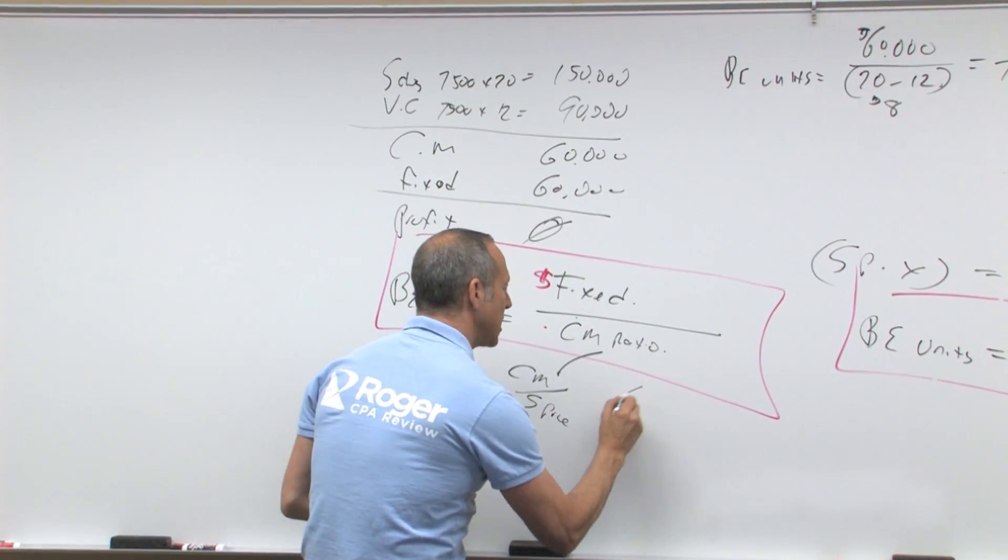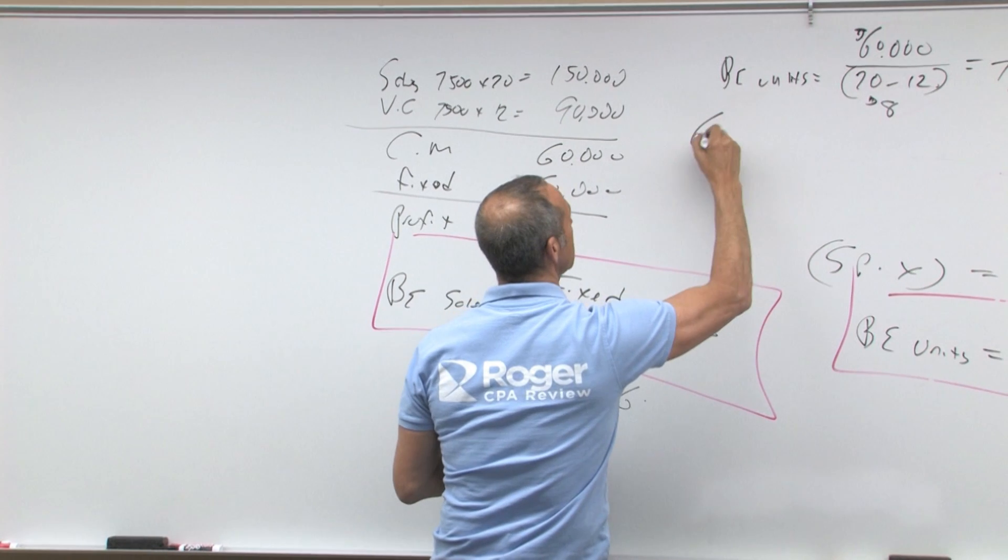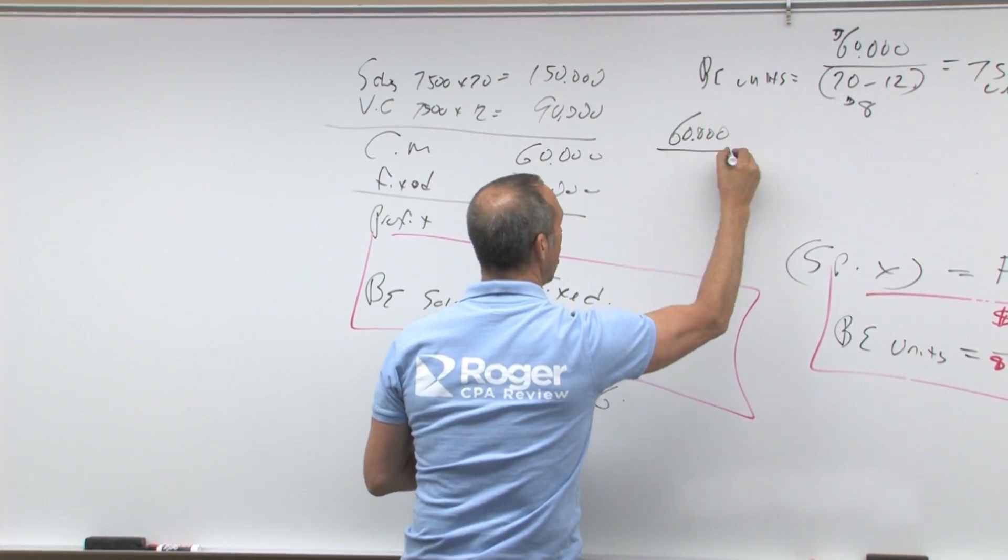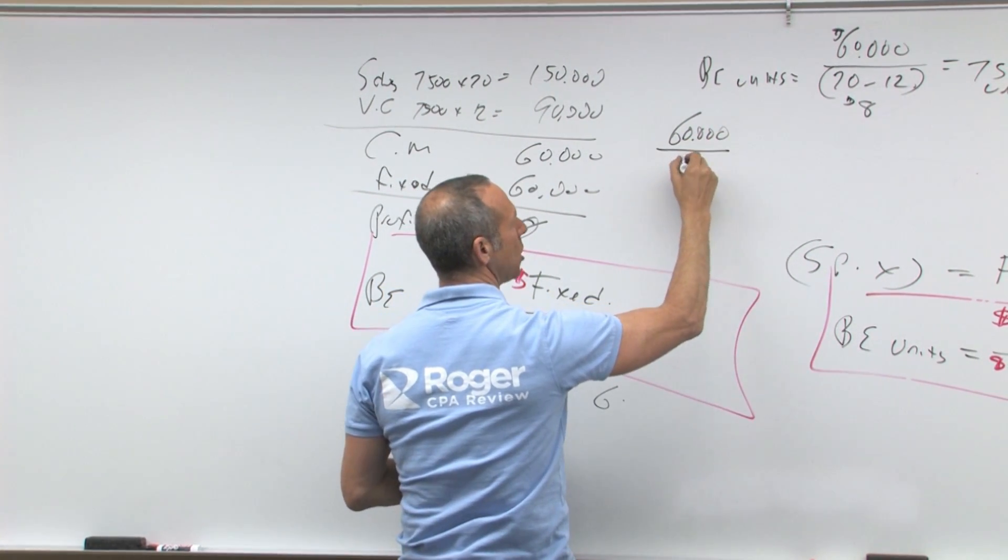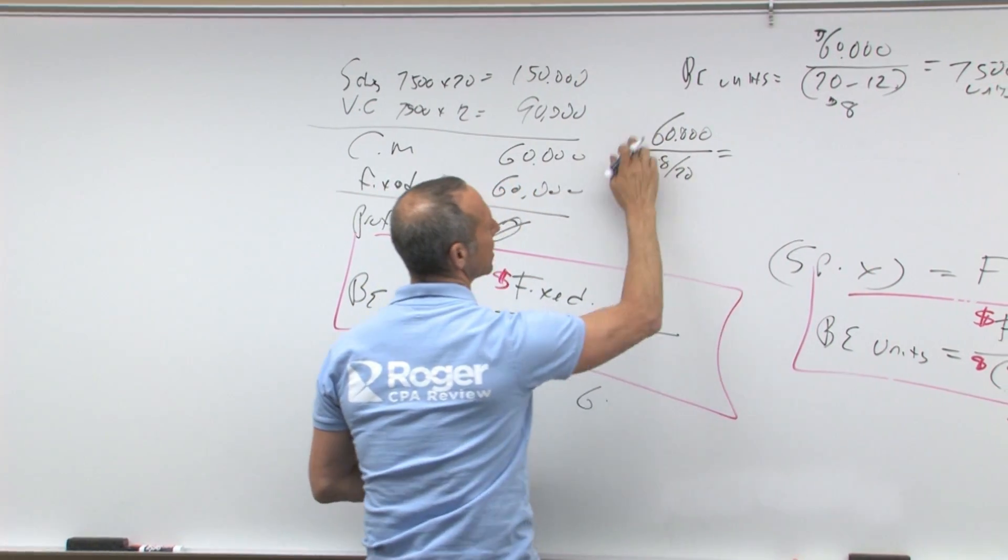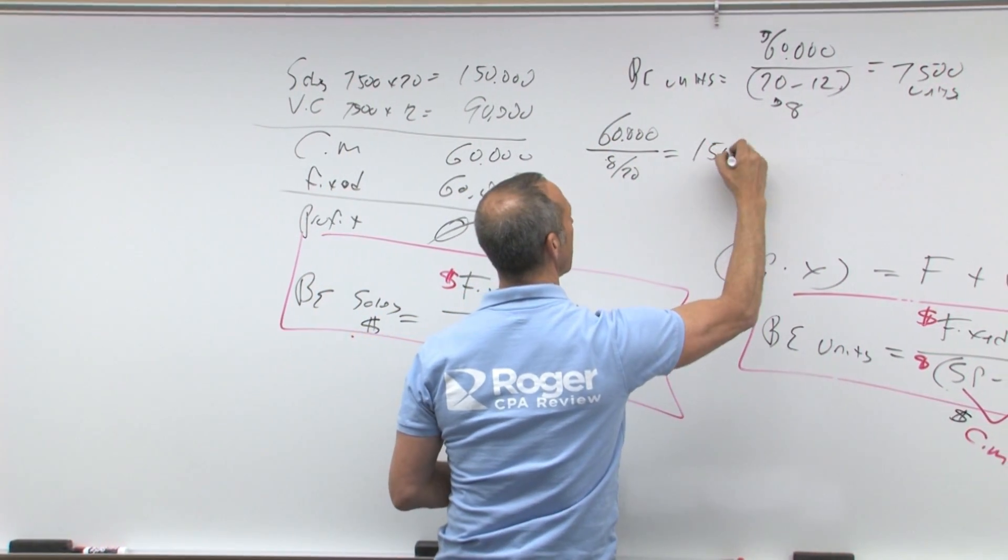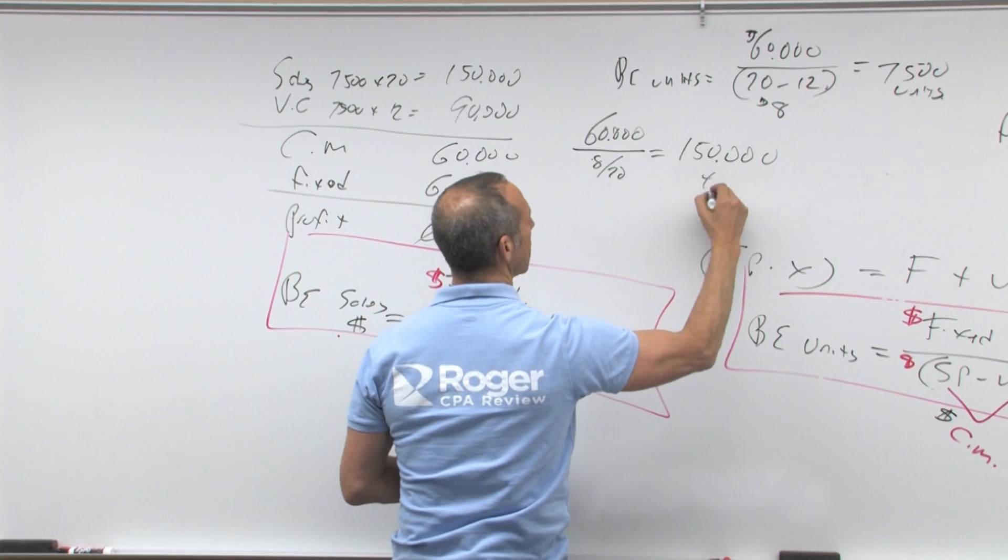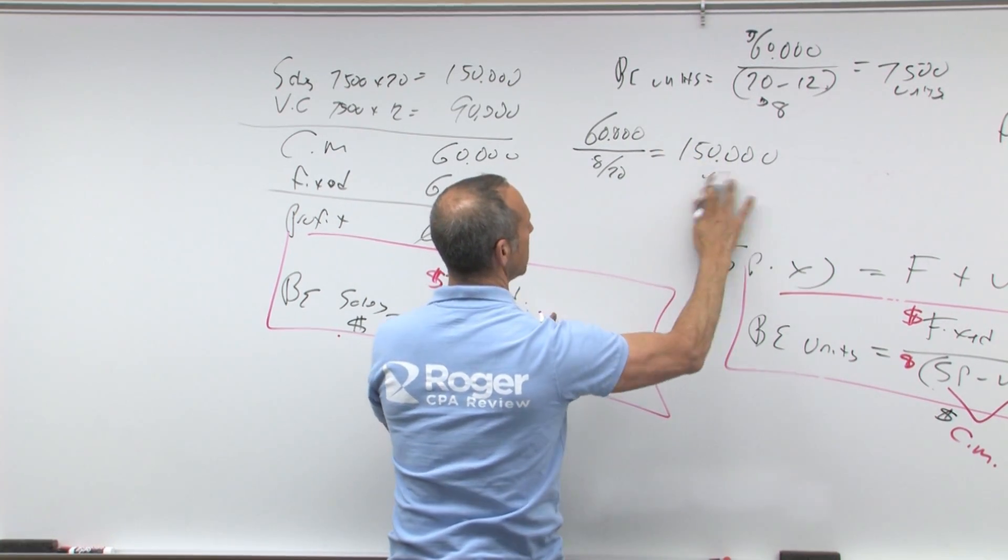We end up with $60,000, I'll do it up here, $60,000 over CM ratio, which is eight over 20 or 40%. 40% of something is 60, 40% of 150 is 60, because five times four is zero, carry the two is $60,000. That works.